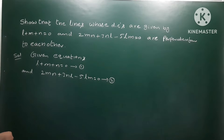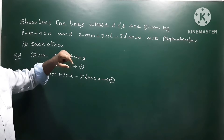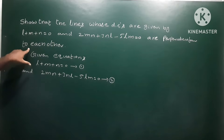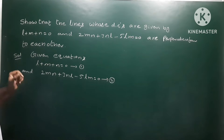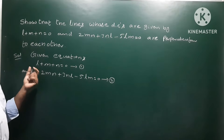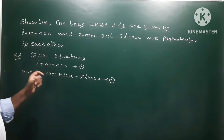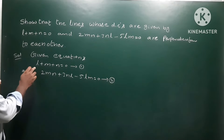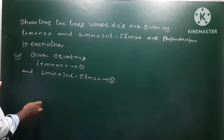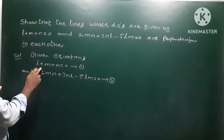Show that the lines whose direction cosines are given by l plus m plus n equals 0 and 2mn plus 3nl minus 5lm equals 0 are perpendicular to each other. To prove two straight lines are perpendicular, we need to prove that l₁l₂ plus m₁m₂ plus n₁n₂ equals zero.